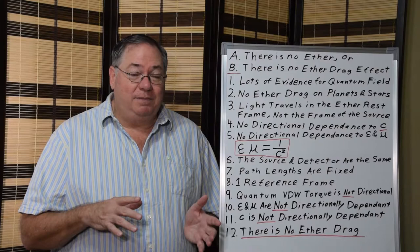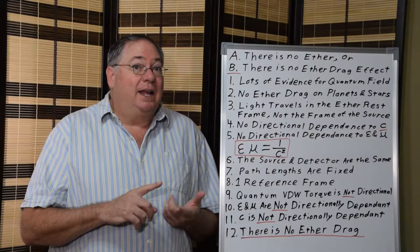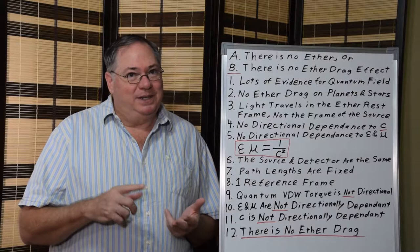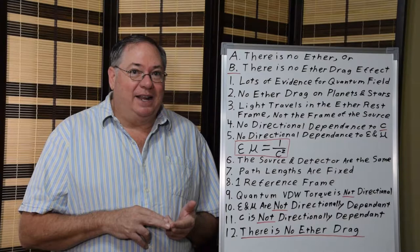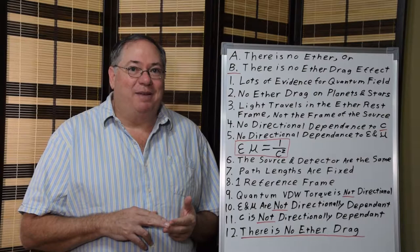I wanted to go back through the evidence for the existence of the quantum field that I covered in the previous video. There are things like the quantum field is polarizable and magnetizable, which indicates that it contains electric charges. It also has an electric constant and magnetic constant.